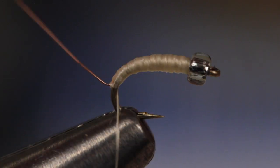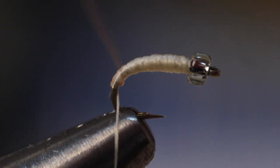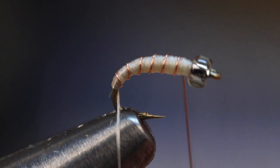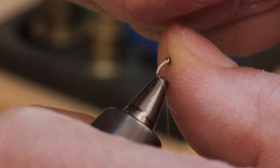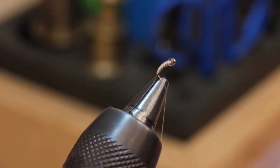With that done, leave your thread at the hook bend and make open spiral wraps with a copper wire to segment the fly. When you reach the bead, take a few wraps and snip, helicopter, or break the wire off close.